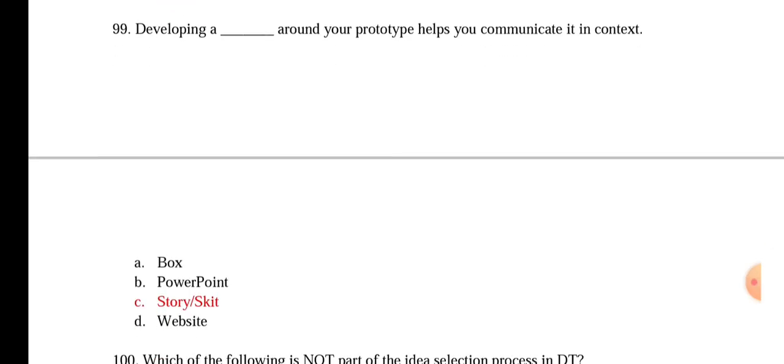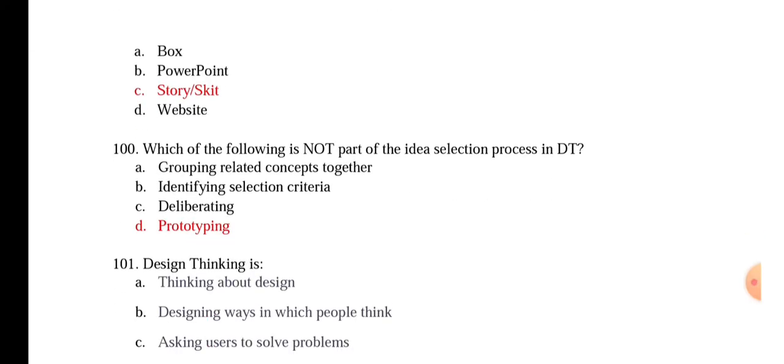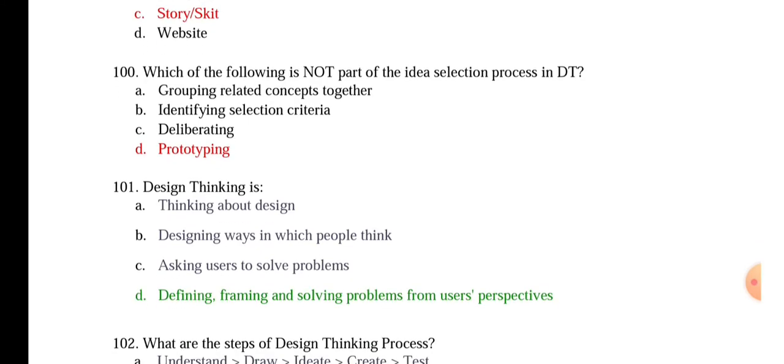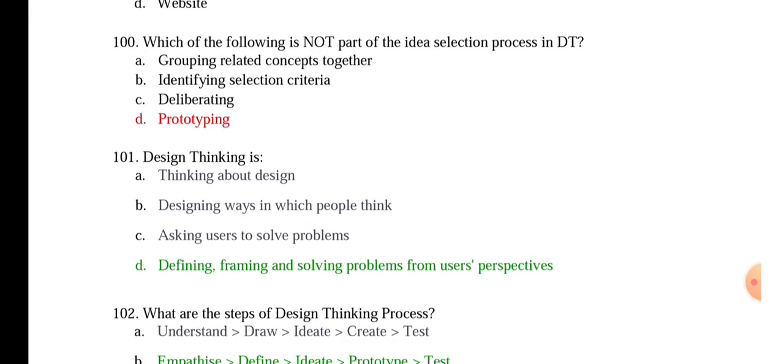Developing a dash around your prototype helps you communicate it in context. Story or a skit. Which of the following is not part of the idea selection process in design thinking? Prototyping. So, these are about 51 to 100 questions. Let us see 100 to 150 questions in the next video. Thank you.